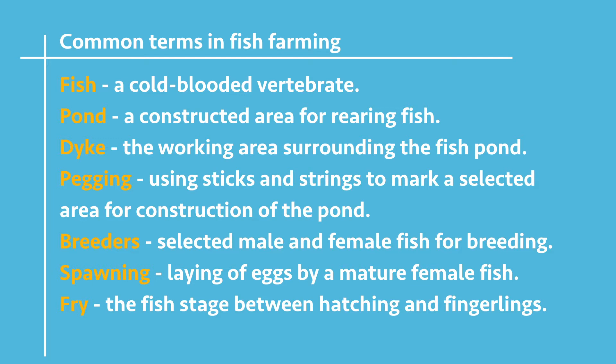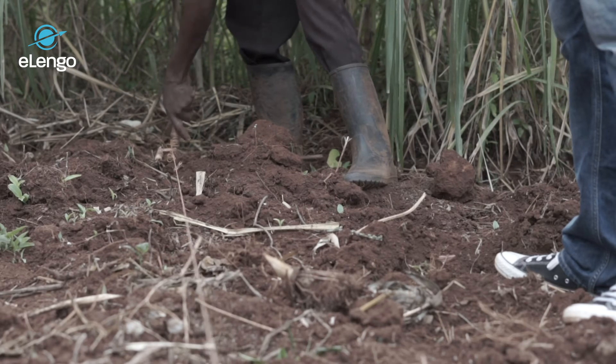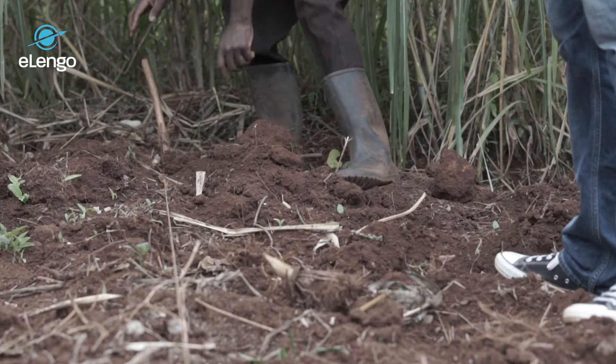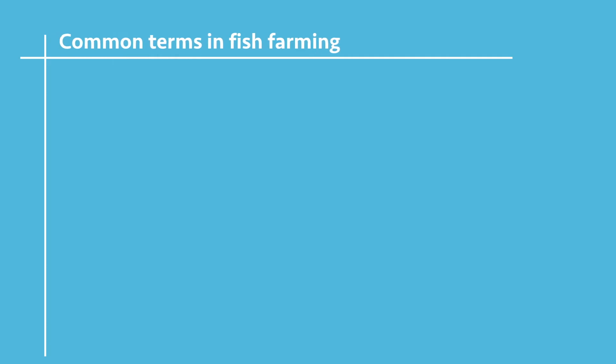A dike is the working area surrounding the fish pond. Pegging is the activity of using a string and a stick to mark the construction areas in a fish pond. Breeders are the selected male and female fish for breeding.